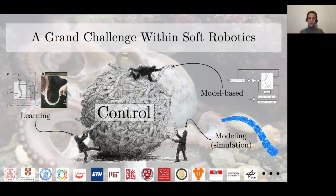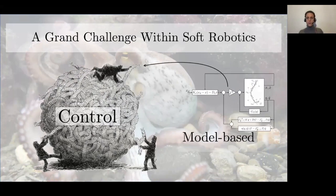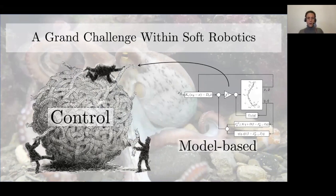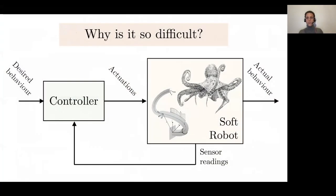But interestingly enough, the model-based approach to the control of these systems is quite new, especially in its dynamic formulation. So this will be the topic of today's talk. First, let's try to understand why this is such a complex problem - why it's so difficult to do feedback control of continuous soft robots by means of model-based control.